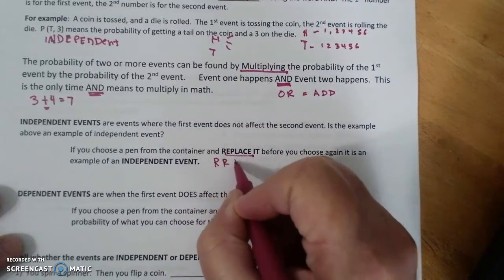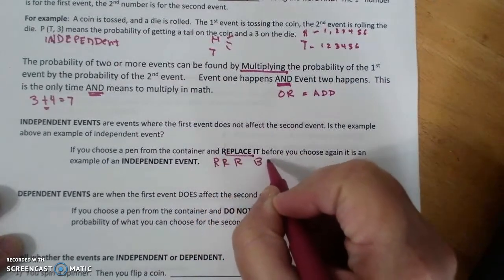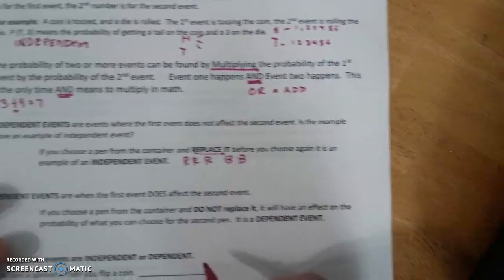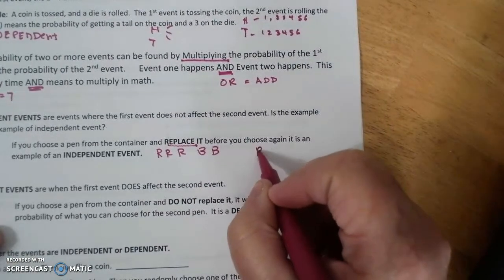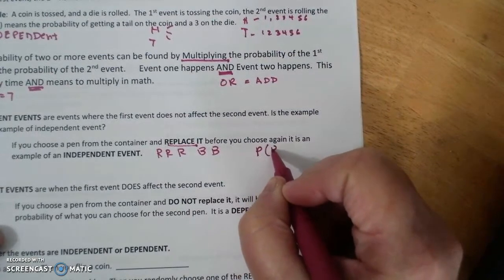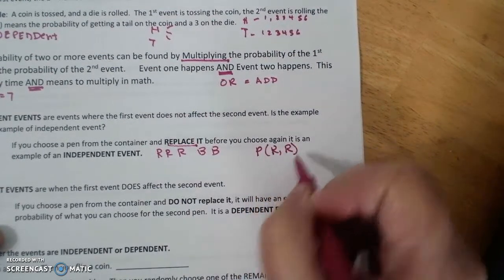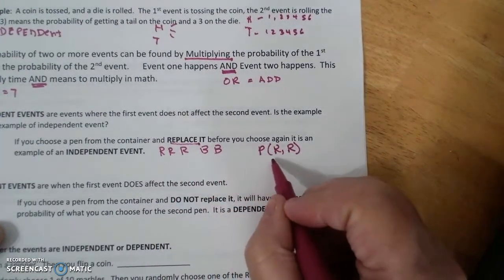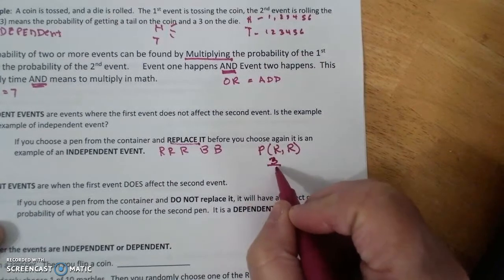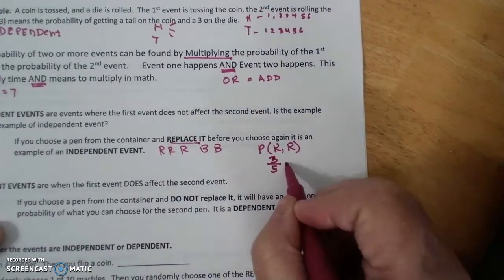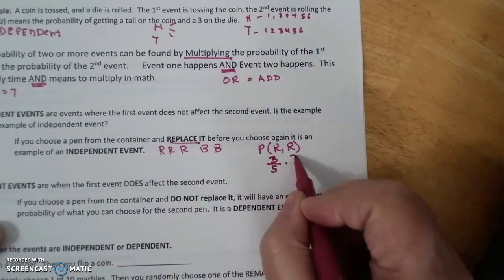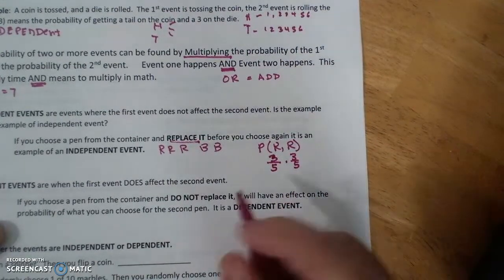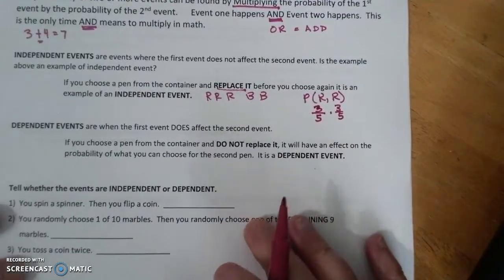So if I have red, red, red, blue, blue, and I pick a red, the probability of picking a red and then a red. Picking a red would be 3 out of 5, and the probability of picking a red is 3 out of 5, and I multiply those together.